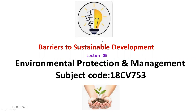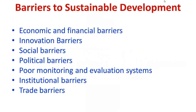At the end of this session, you will be able to understand what are the major hindrances or barriers for the development of an environmental protection system in a particular organization or society. As you can see, these are the checklist of different barriers applicable for sustainable development. Remember that the environmental protection and management system is one typical example of sustainable development.